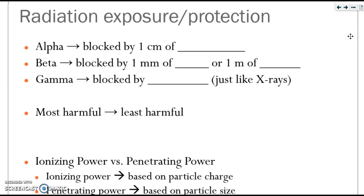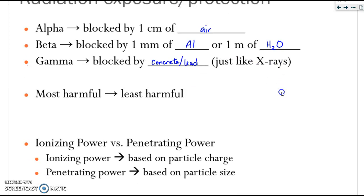Let's talk about radiation exposure and how you can protect yourself. Alpha particles can be blocked by one centimeter of air. Beta particles can be blocked by a very small amount of aluminum, such as aluminum foil, or a meter of water. Gamma rays can be blocked by concrete and lead, just like x-rays. When it comes to harmfulness, gamma is the most harmful, then beta, and last, alpha.